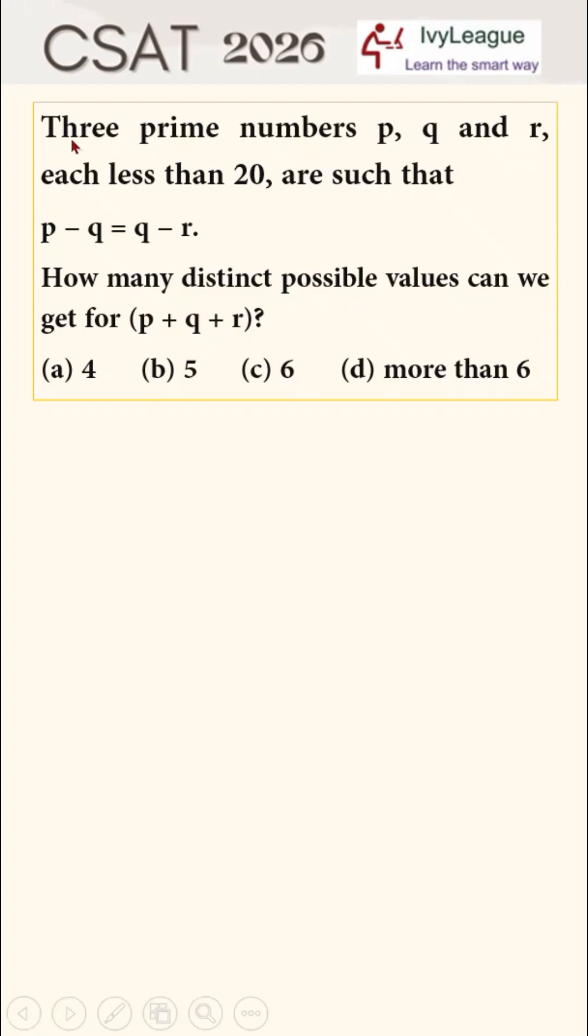When you look at the word three prime numbers, you may get mistaken that this is a number system question. But if you approach it as a number system question, you will end up doing a lot of calculation unnecessarily and you will have to prepare random combinations of p, q, and r which will waste a lot of your time.